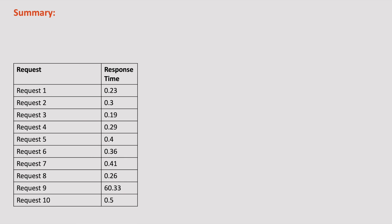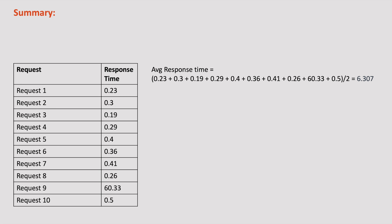And the last type of metric is Summary. A summary is similar to a histogram, but instead of measuring the distribution of values over time, it measures the quantiles of the values over time. For example, let's say I want to calculate the average response time for these 10 requests. If we calculate the average response time, it looks something like this — these 10 requests took on average 6 seconds to respond. But if you see the response times, almost 9 requests took less than 0.5 seconds. So just because of this single outlier request, we are analyzing the performance of our application in a wrong way. So to ignore these outliers, we use percentiles.